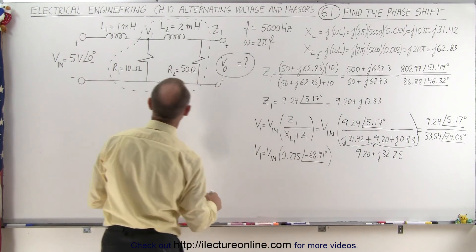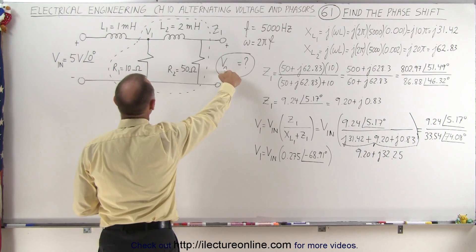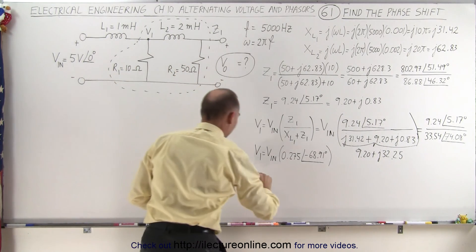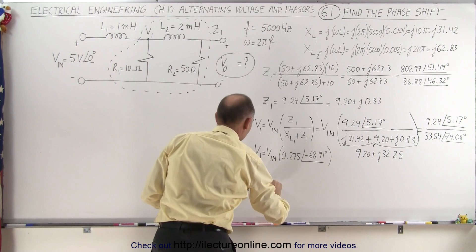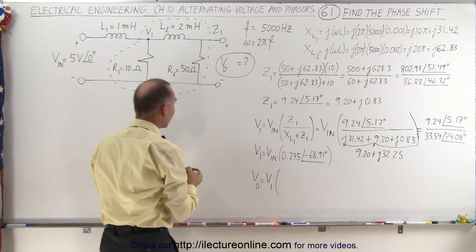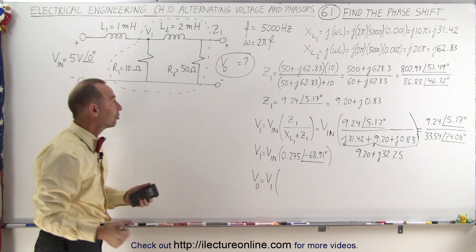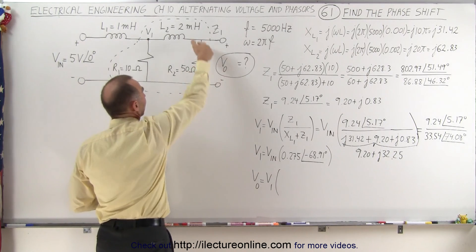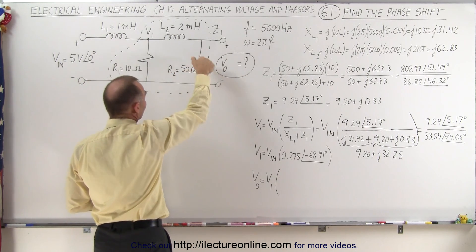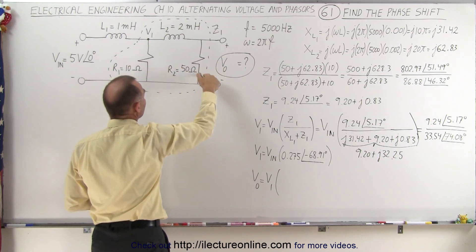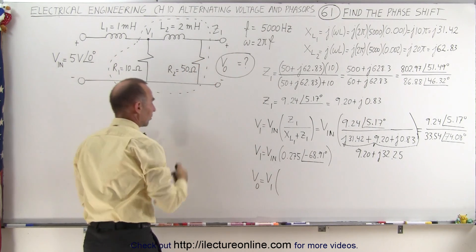Now we need to calculate Vout in terms of V1. So now we can write that Vout equals V1 times, again, we're going to do a voltage divider ratio.